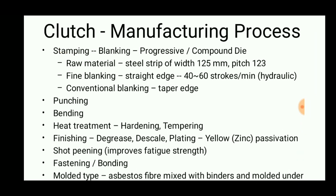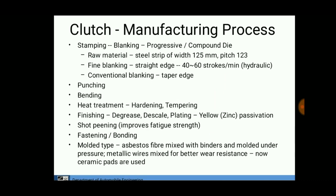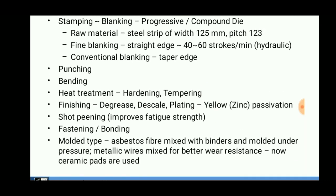The clutch manufacturing process is a tedious one involving a series of steps: stamping, blanking, and progressive or compound die operations. The raw material is taken at a width of 125 mm with a pitch of 123. Fine blanking uses a straight-edge configuration with 42–60 hydraulic strokes. The plate is fixed between the die and a hydraulic punch placed at the center to blank the part.